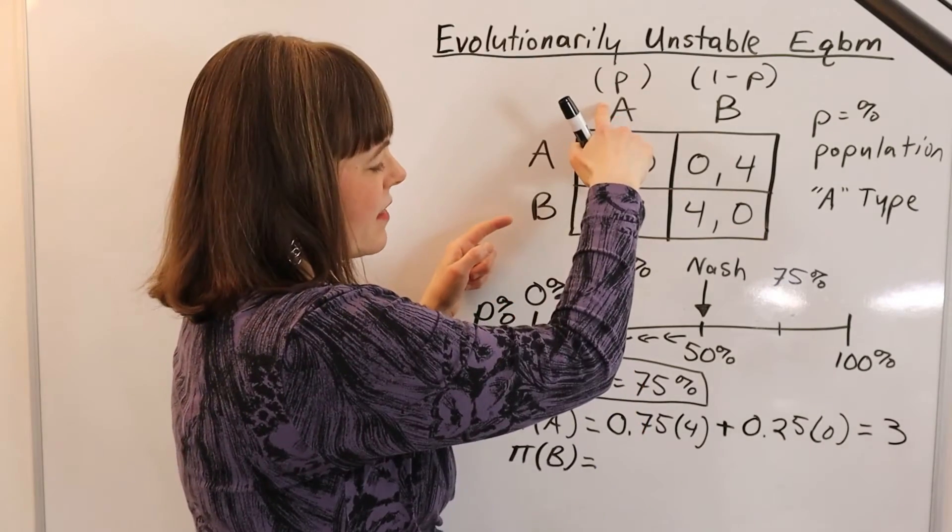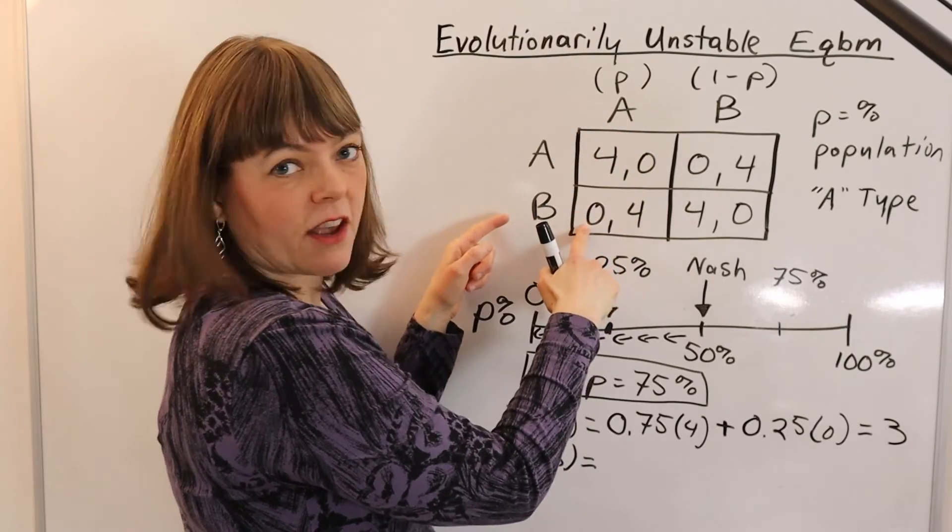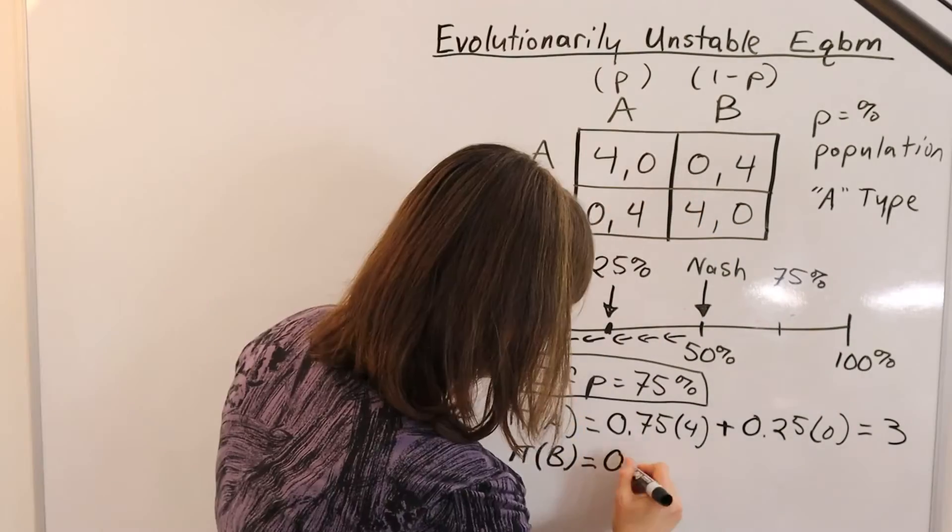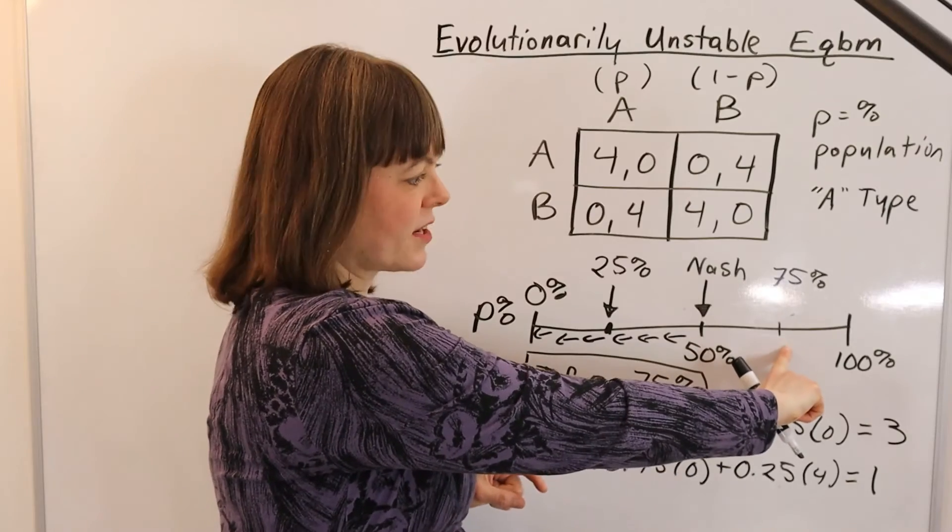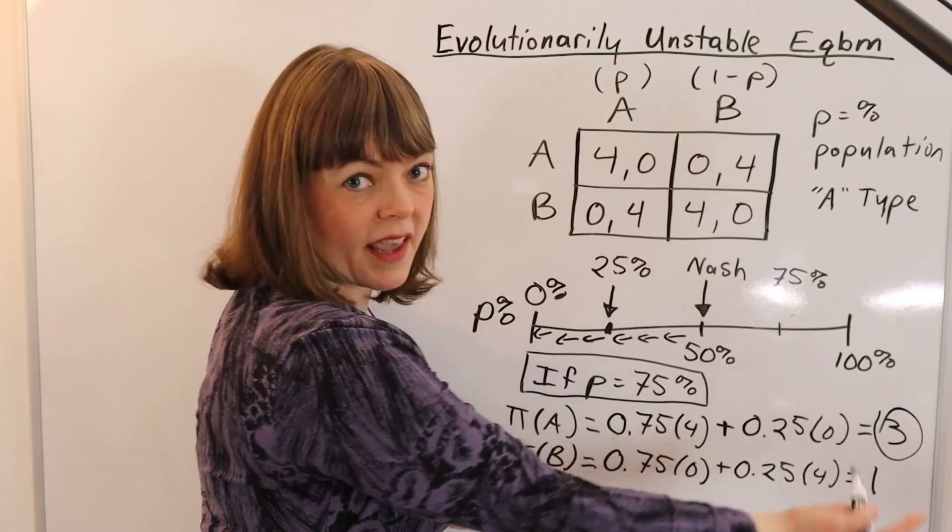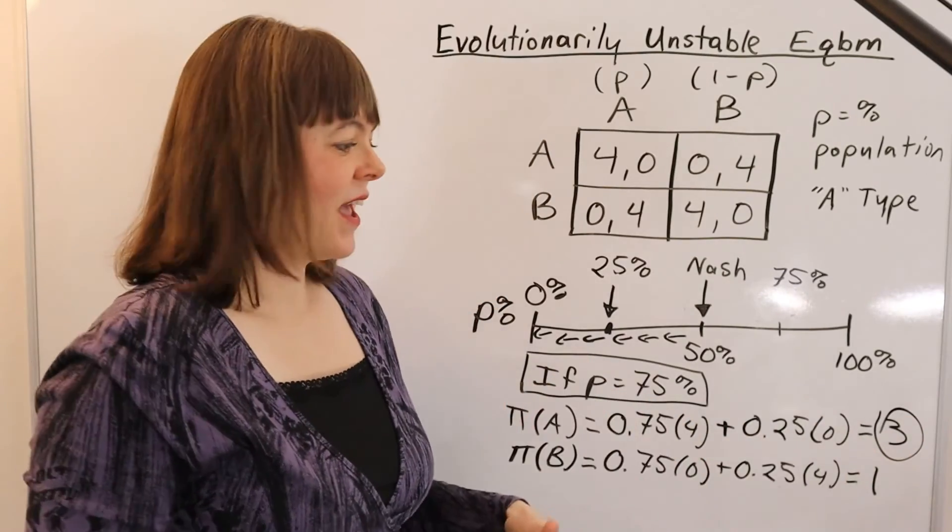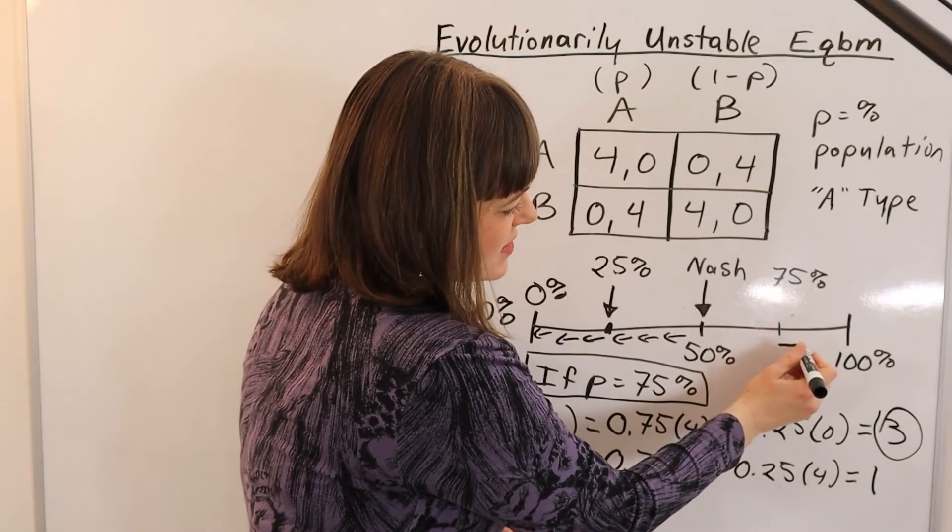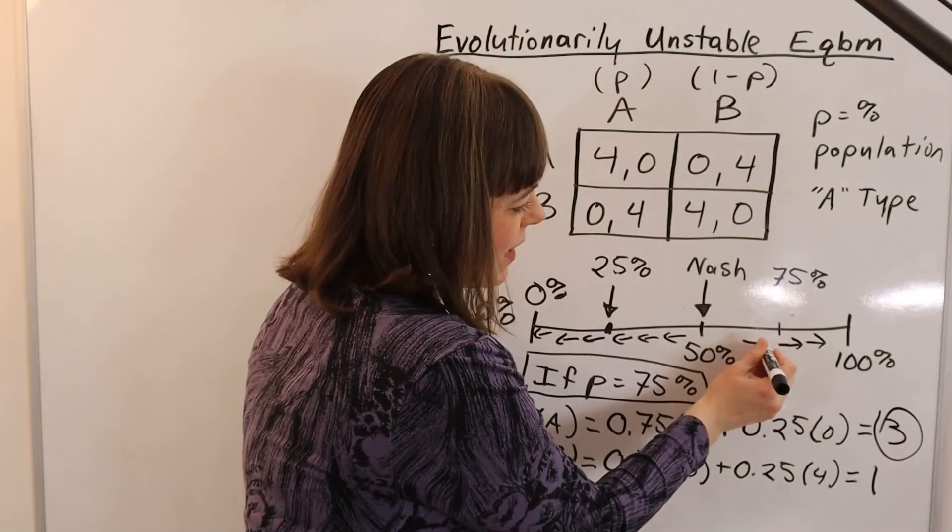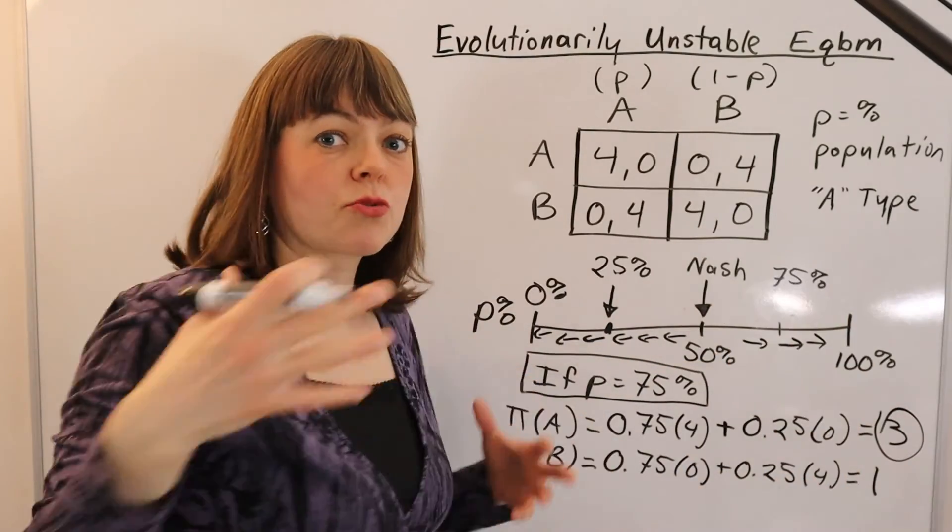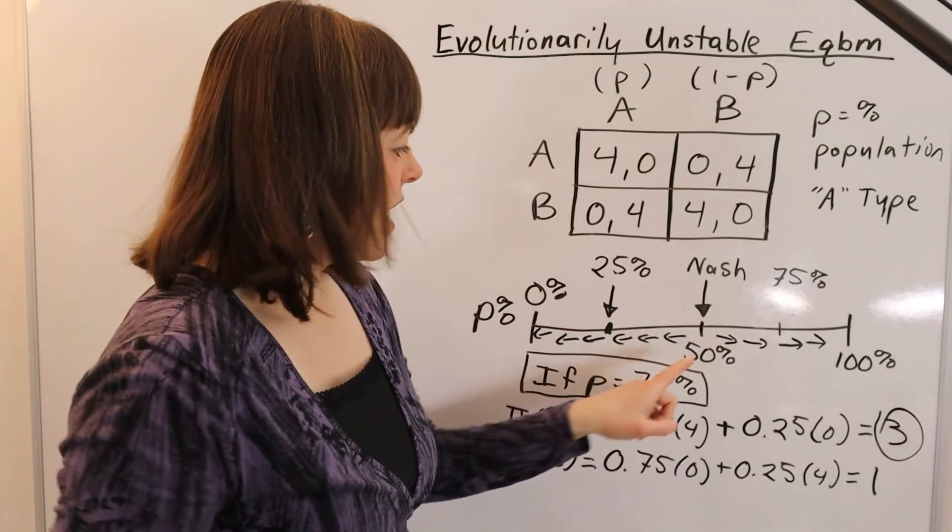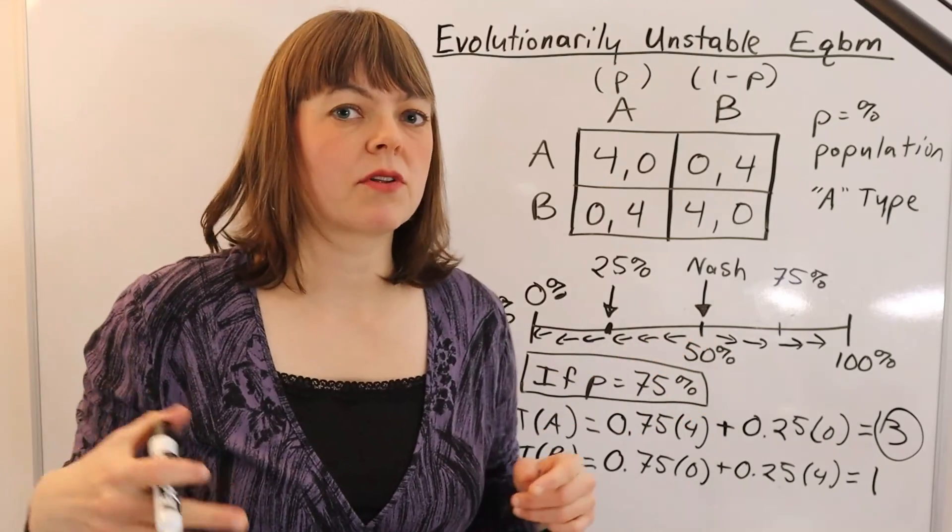Now we'll do the same thing for the B players. The B players' payoff is probability of encountering an A type, times payoff if they encounter an A type, plus probability of encountering a B type, times payoff if they encounter a B type. This means if we find ourselves at 75% of the population being A types, then the A types will have an advantage over the B types. The A types have an expected payoff of three children, and three children is way more than one child, so that means we're going to tend toward the population increasing its percentage of A types over time, and of course that will lead to a population where the A types crowd out the B types, the B types go extinct. So in which case we have our arrows moving away from our Nash, and therefore this is going to be an unstable Nash equilibrium.